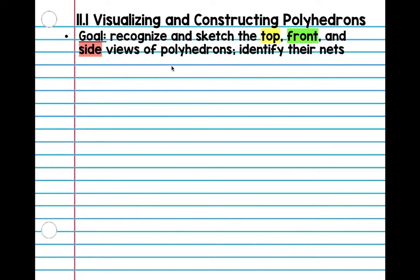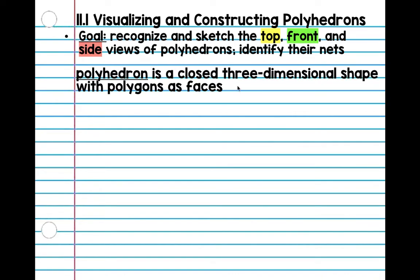So polyhedron — it's a big word — but polyhedron just means it's a 3D shape with polygons as faces. And as you guys learned a few months ago when we did geometry, a polygon is just a closed shape with straight lines. Is a circle a polygon? No, it is not because it's curved. So that is just what a polyhedron is.